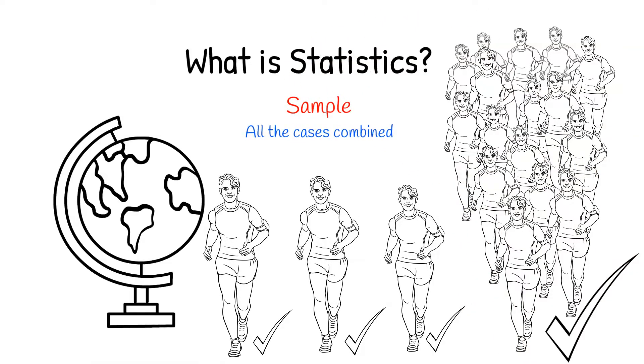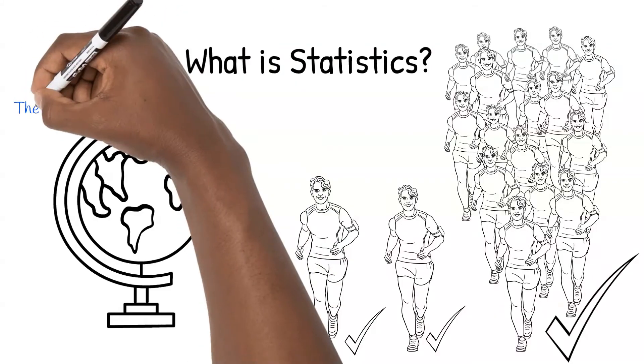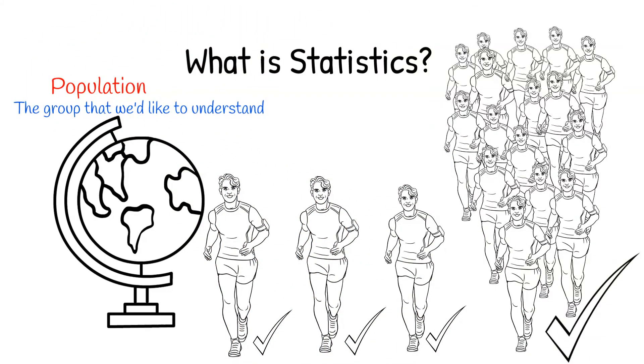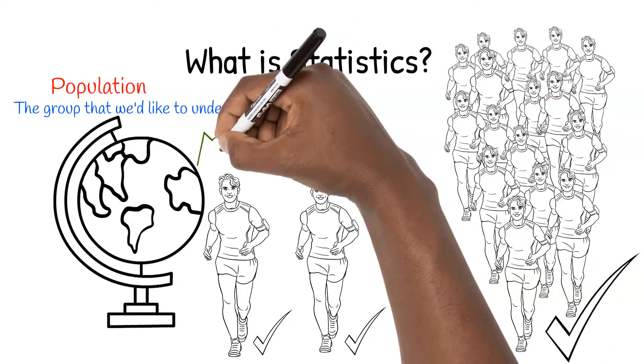Since it would be impossible for us to question every single male runner in the world, we collect information from a sample. If our sample is large enough and taken in a valid way, we can start to learn about a greater population, which in this example is all male runners in the world.